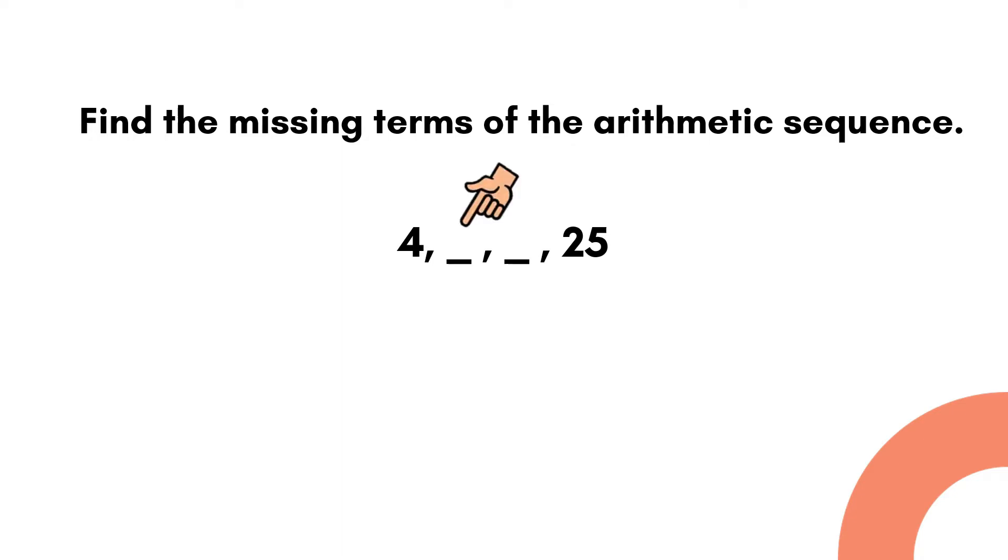To solve this, we let 4 be the first term or a sub 1. The two missing terms will be a sub 2 and a sub 3 respectively, then 25 will be the fourth term or a sub 4.